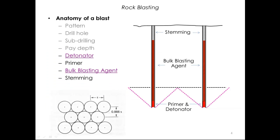The last material to go into the hole is called stemming. This material is usually the rock chips or cuttings from the drilling of the hole. Since the blast energy will seek the path of least resistance, the stemming serves to block the top of the hole so that the energy will be forced outward from the hole and not upward.